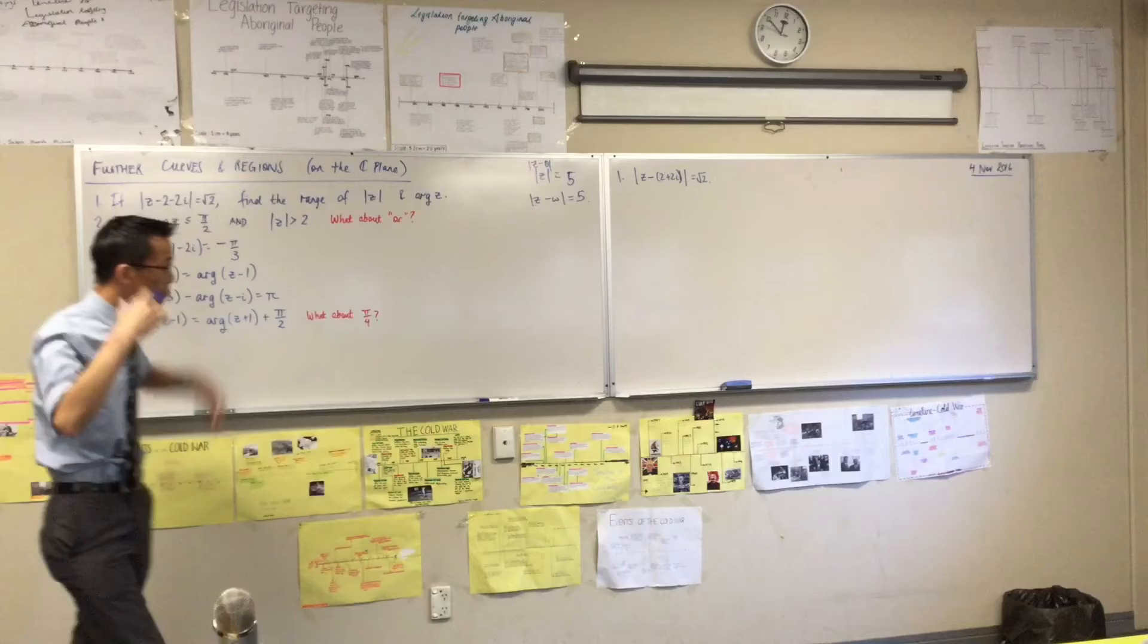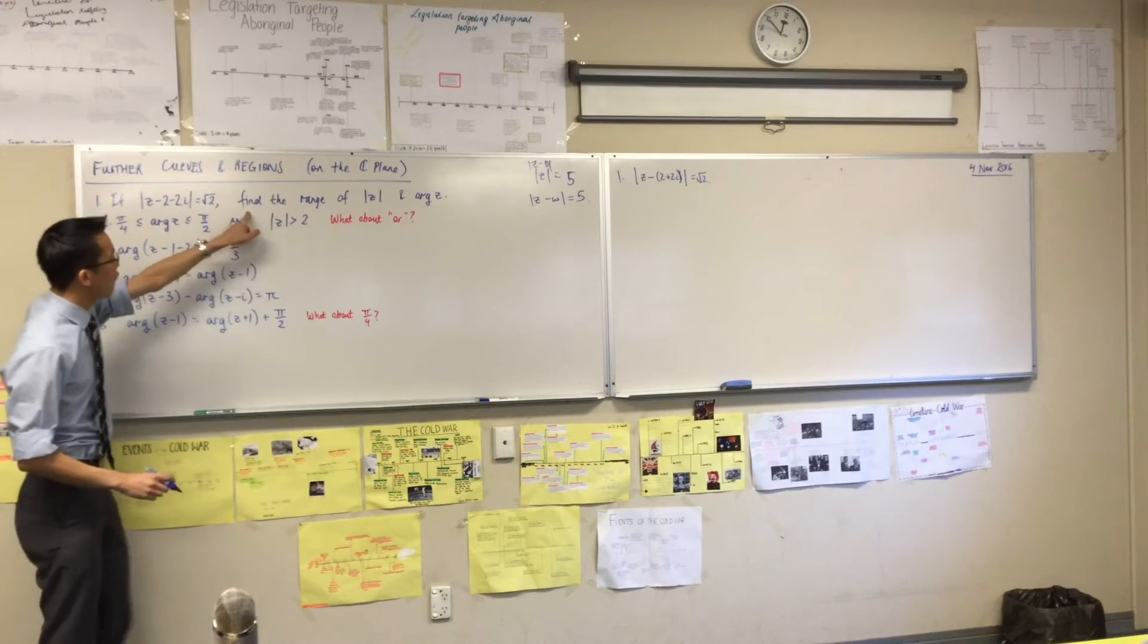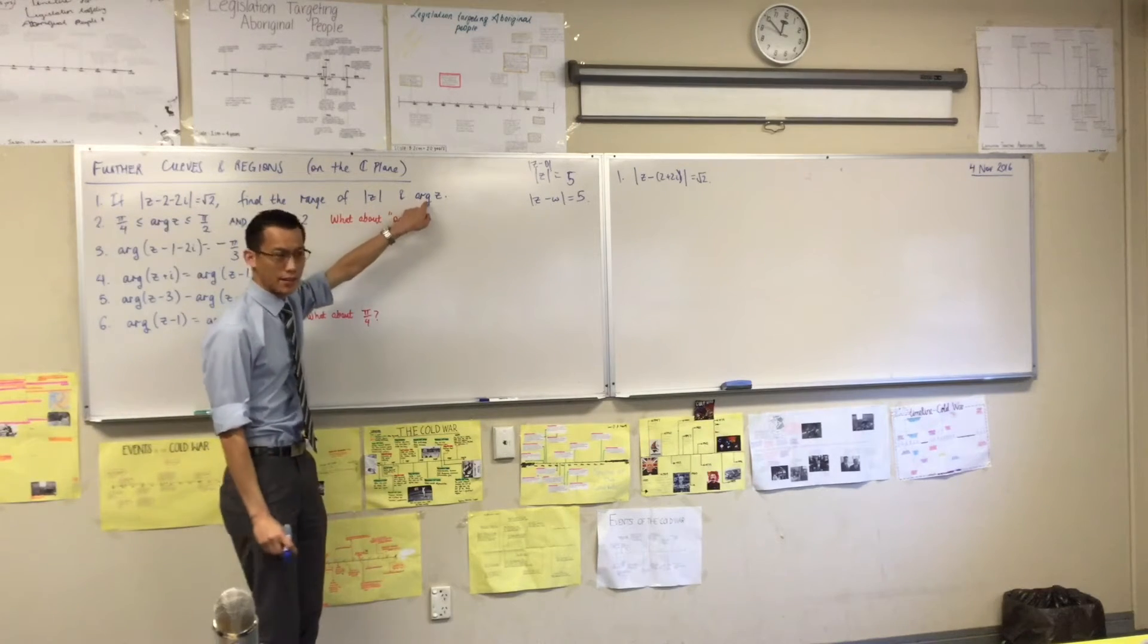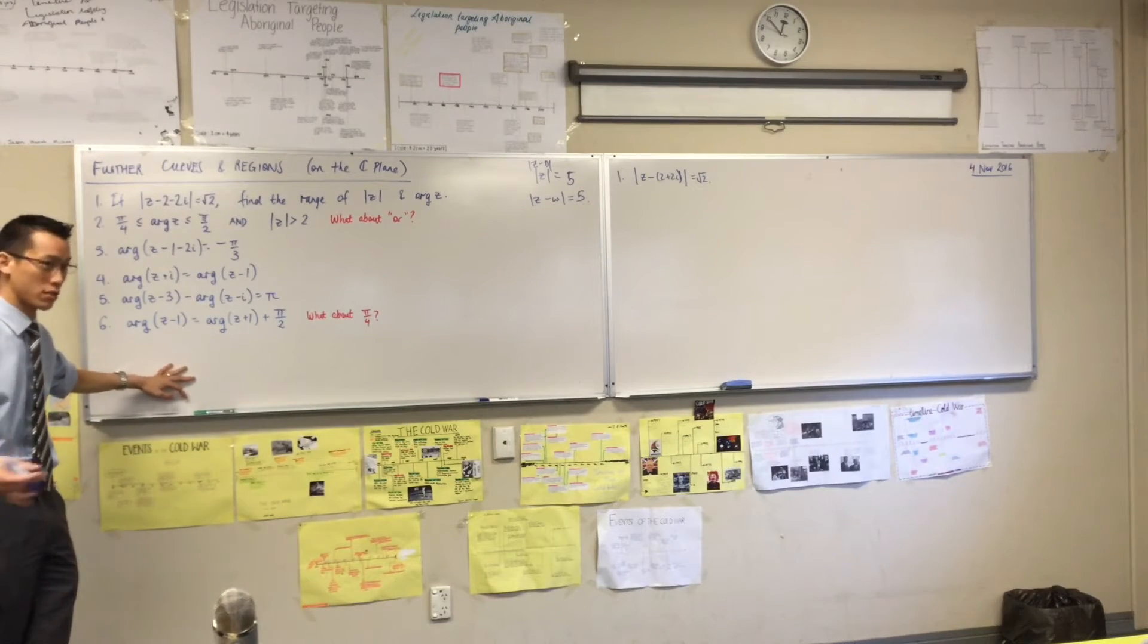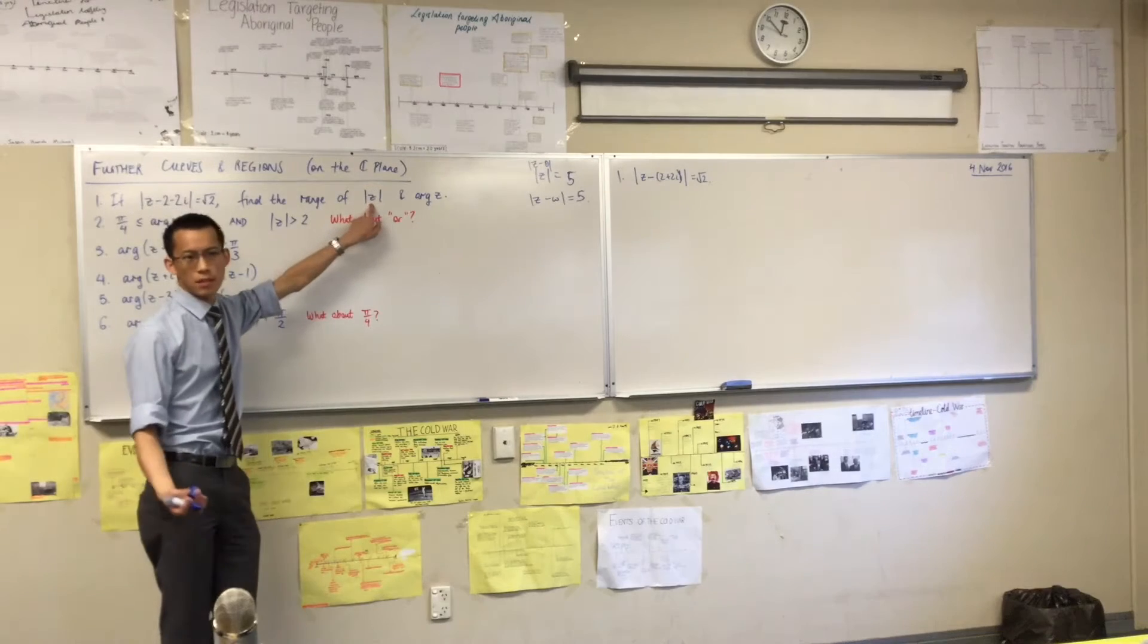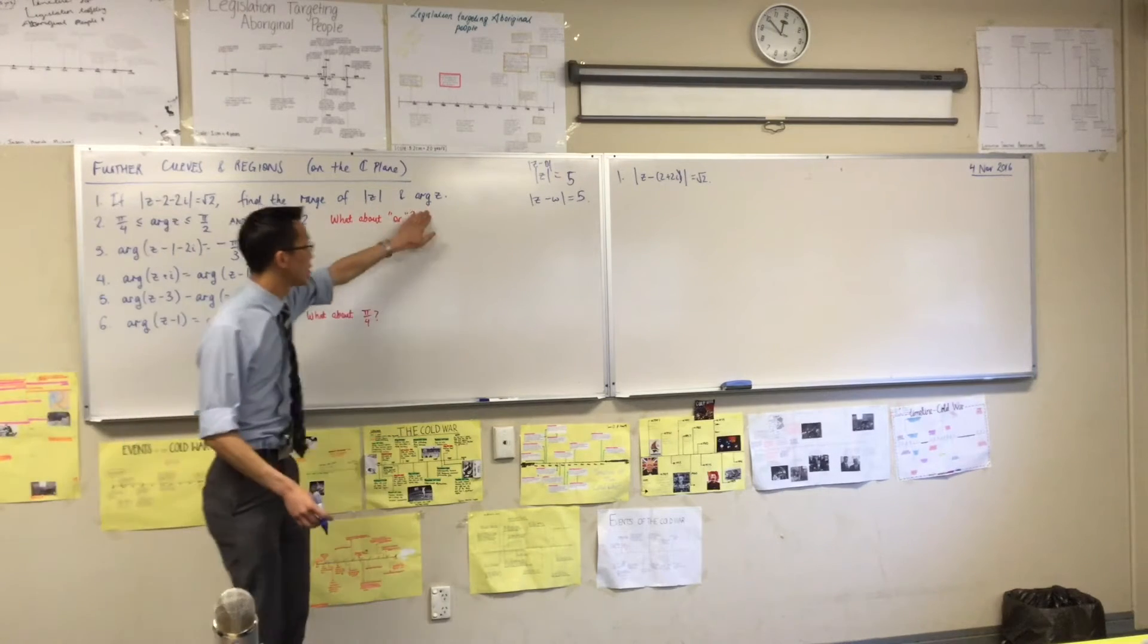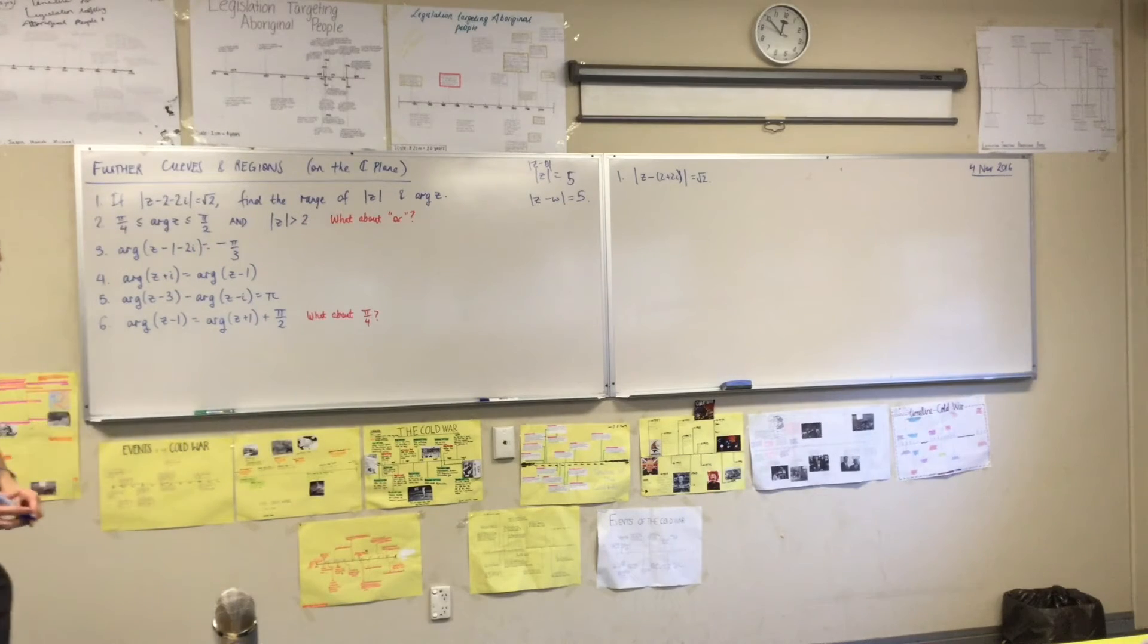All right, so now I've got a sort of a rough picture in my head. Then I have a look at the question. Find the range of mod z and find the range of arg z. So you can see the theme of this morning's graphs? Last time we focused on distances. Today we're going to focus on arguments. We want to find, what's the biggest mod z can be? And what's the smallest it can be? That's the range. And what's the biggest this can be? What's the smallest that can be? So clearly, I need a picture.